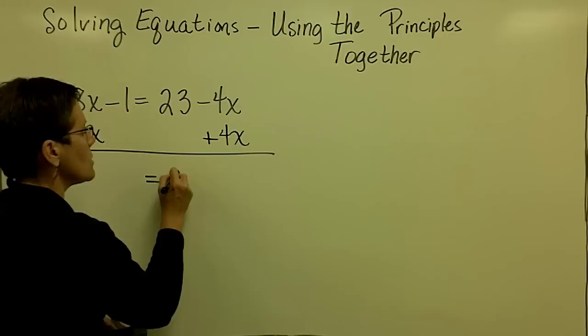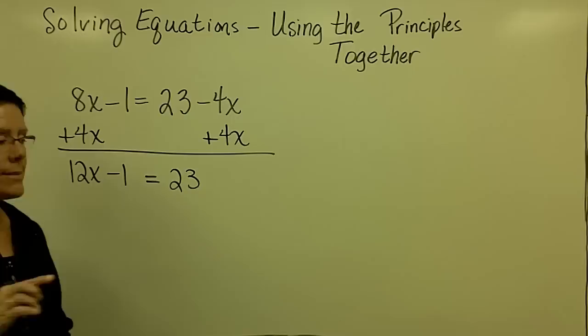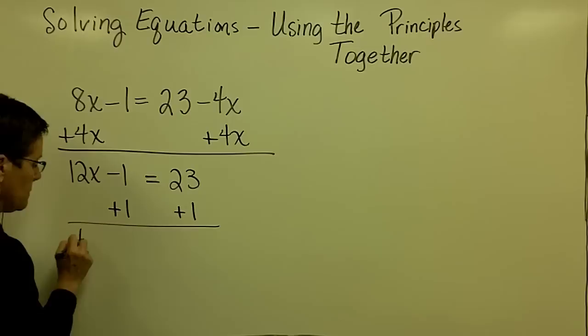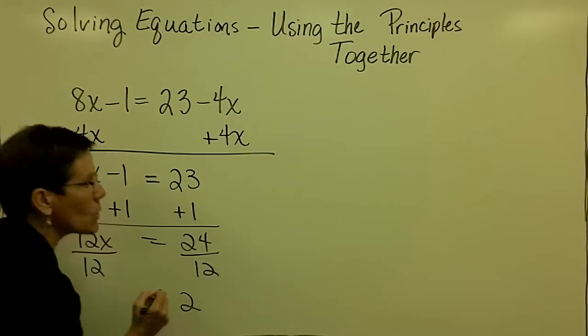That gets rid of the x term over here and just leaves the 23 on the right side. I collect those two like terms. 8x and 4x adds to be 12x and now I'm in a position where I don't have choices. I have to add 1 to both sides. To get the variable term alone, I have to get rid of this, so I add 1 to both sides of the equation. And then finally I use the multiplication principle last. In this case I'm going to divide both sides by 12 and find out that x is equal to the number 2.